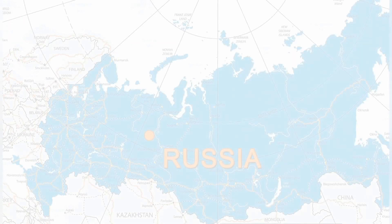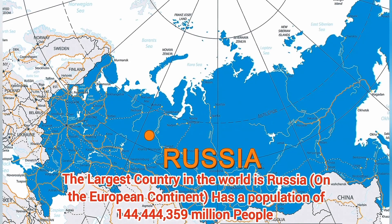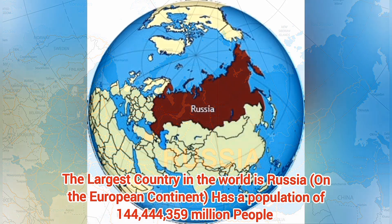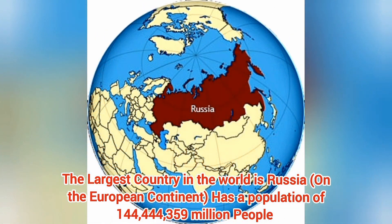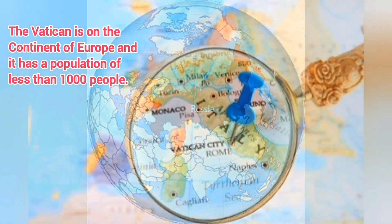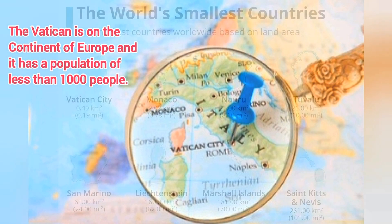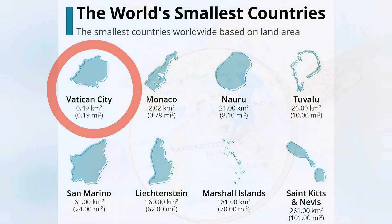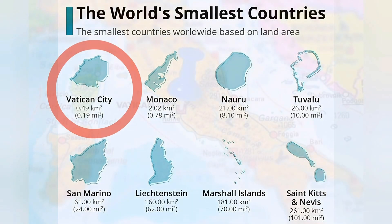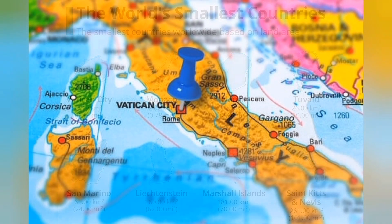The largest country in the world is Russia and it's on the European continent. It has a population of about 144 million people. The smallest is the Vatican with less than 1,000 people. The Vatican is on the European continent as well.